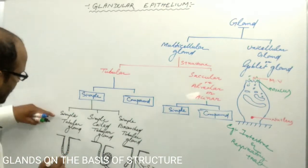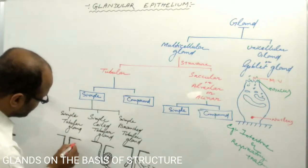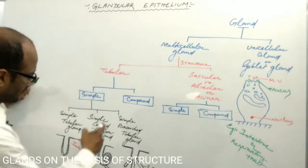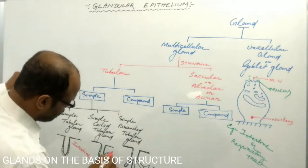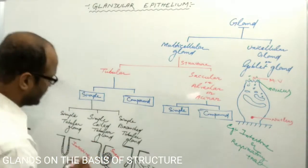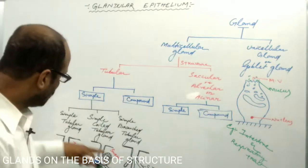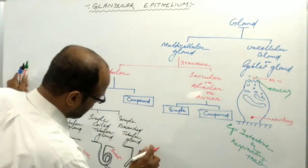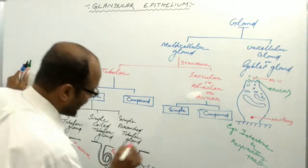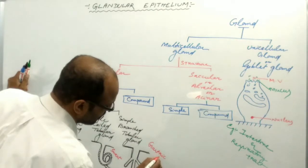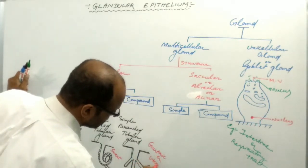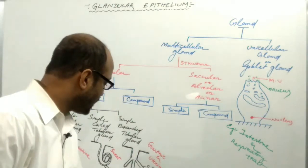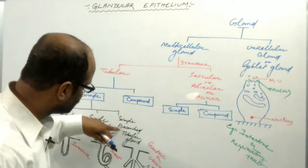The simple tubular gland may be present in the intestine — intestinal glands are a good example. The simple coiled tubular gland example is the sweat gland of the skin. The simple branched tubular gland may be present in the stomach — so the gastric gland — as well as the uterine gland, the glands present in the wall of the uterus. These are very good examples of the simple branched tubular gland.